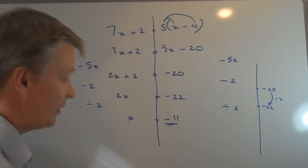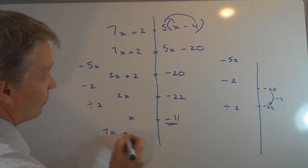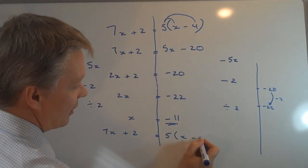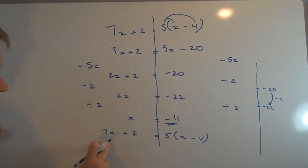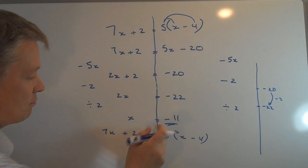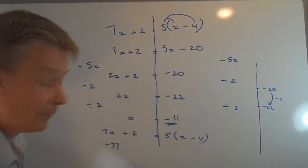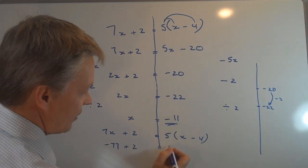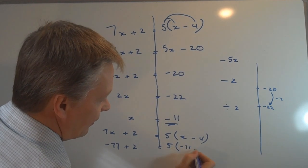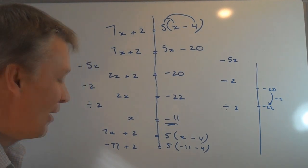If I take that value of minus 11 and feed it back into the original equation, I've got 7X plus 2 equals 5X minus 4. So if I have a value of minus 11, I've got 7 times minus 11 is minus 77 plus 2 equals 5 times minus 11 minus 4.